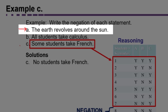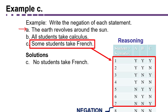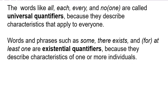What made negation harder in parts B and C were words called quantifiers that indicate a certain quantity. Words like 'all,' 'each,' 'every,' and 'no one' are called universal quantifiers because they describe characteristics applying to everyone. Words and phrases such as 'some,' 'there exists,' and 'for at least one' are existential quantifiers because they describe characteristics of one or more individuals, guaranteeing a characteristic exists somewhere but not for everybody.